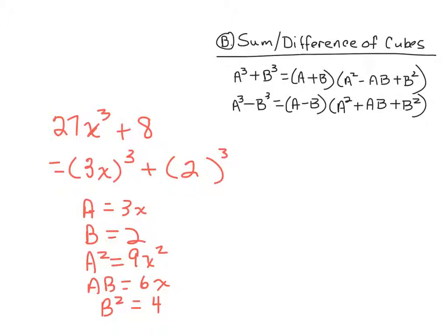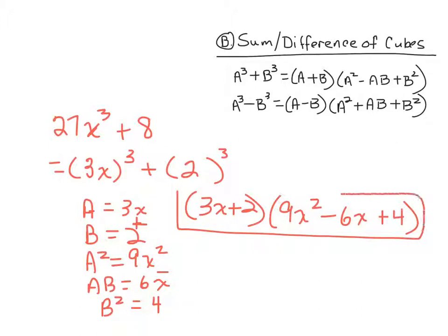Okay, so I've got everything I need now to go fill in to this first formula. Remember, in this first parenthesis, we're going to have a plus in the middle, and in the second parenthesis, that's going to switch in the middle. Okay, it's all over but the shouting now. So the first parenthesis is going to be 3x plus 2, that's the A plus the B. And then in the second parenthesis, I'll have A squared is now 9x squared minus AB minus 6x, and it's always plus B squared or plus 4.